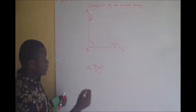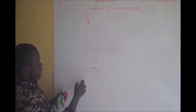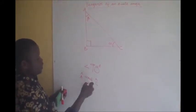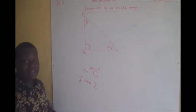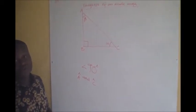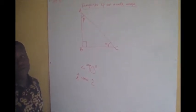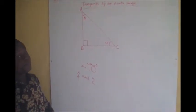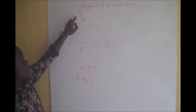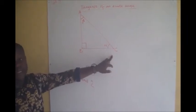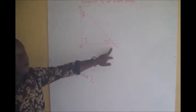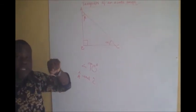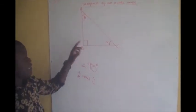Angle A and angle C are referred to as complementary angles. A complementary angle is one whose sum with another angle equals 90 degrees. In other words, for the fact that these are complementary, it implies that angle alpha should not be greater than or equal to 90 degrees.